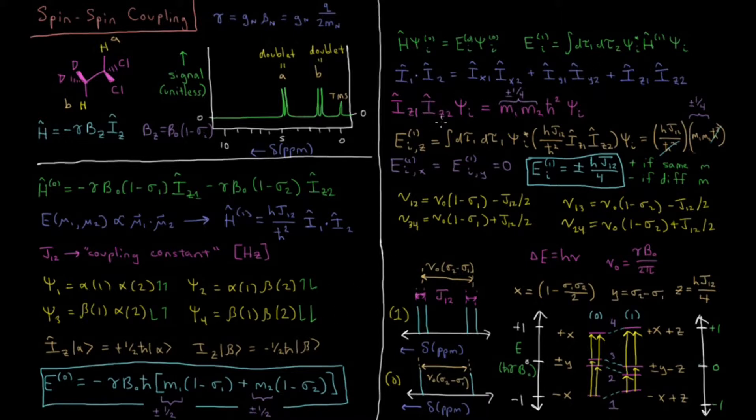Then iz2 won't act on psi 1, it'll act on nucleus 2. And that'll either act on alpha or beta for nucleus 2, giving us plus or minus 1 half h bar for that as well. So this will be plus or minus 1 half, plus or minus 1 half. That result will give us plus or minus 1 fourth. And then we have one h bar from the first operator, one h bar from the second, giving us h bar squared times psi i. So our eigenvalue for iz1, iz2 is going to be plus or minus 1 fourth h bar squared.